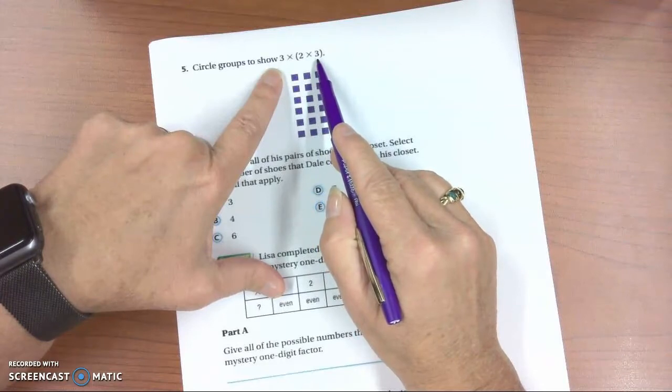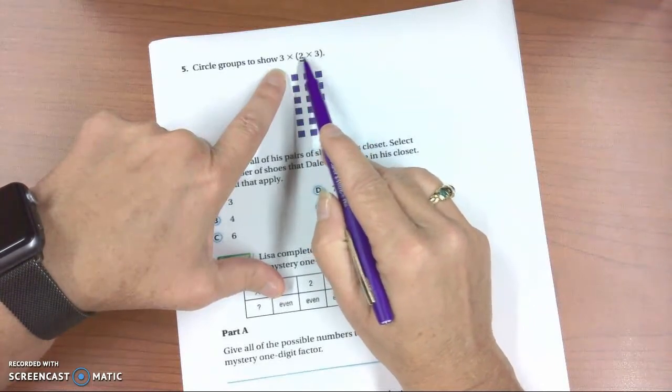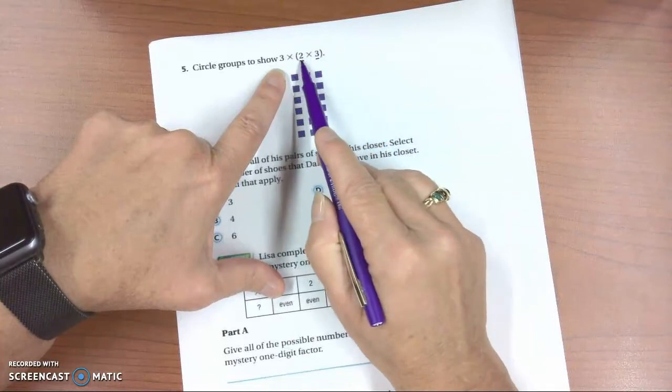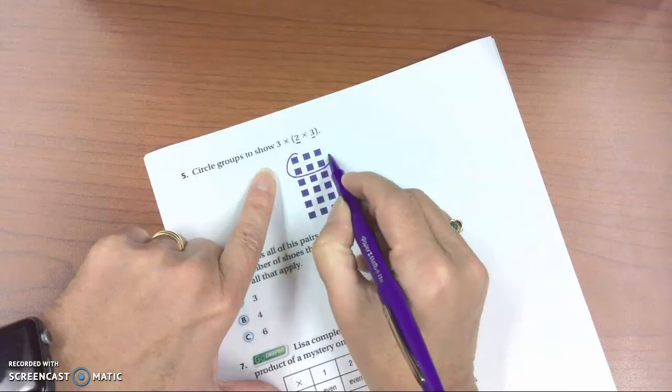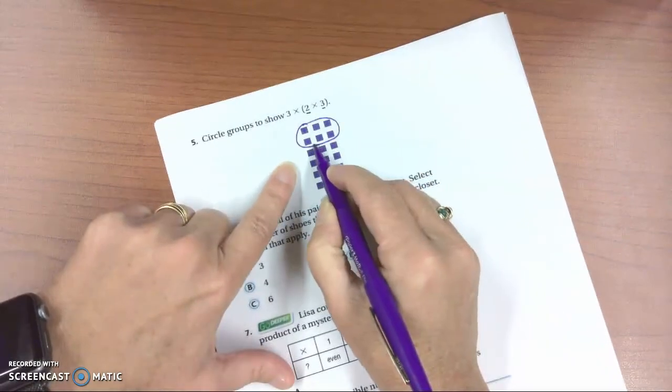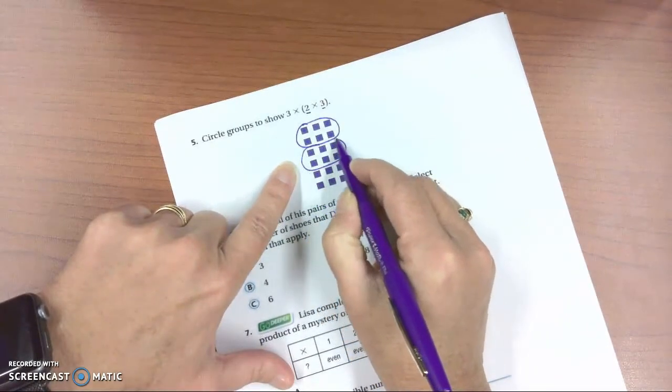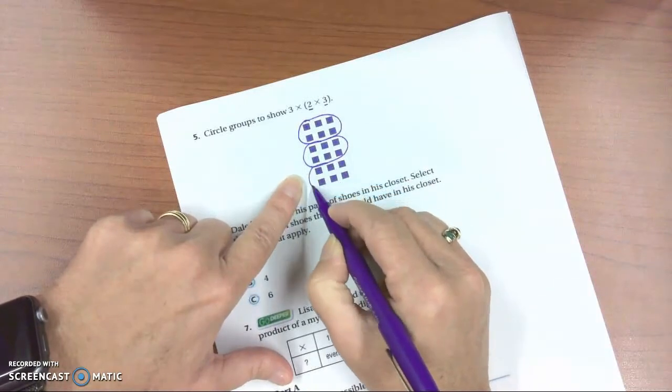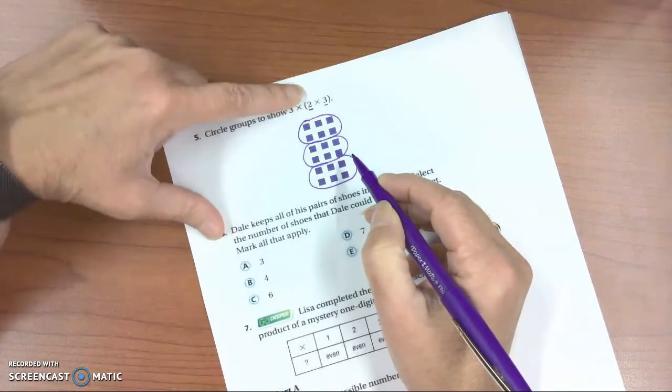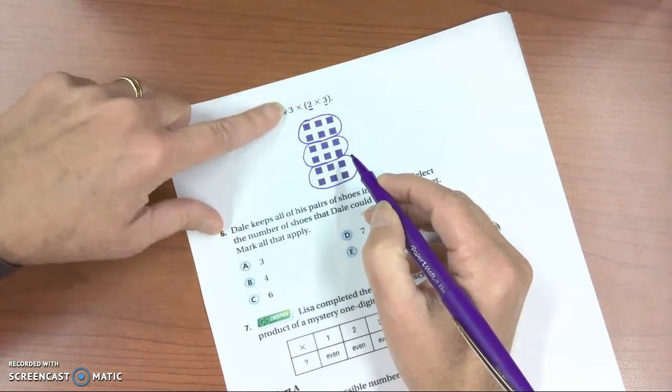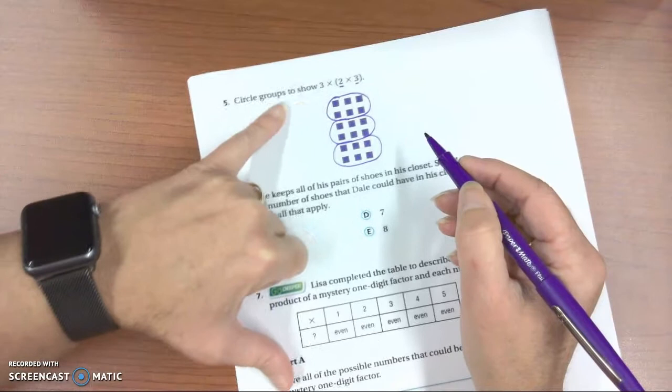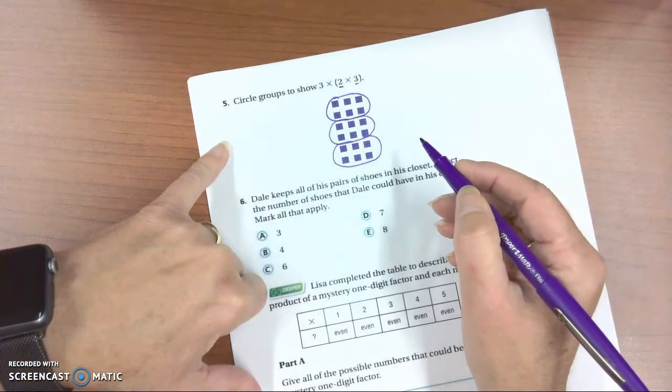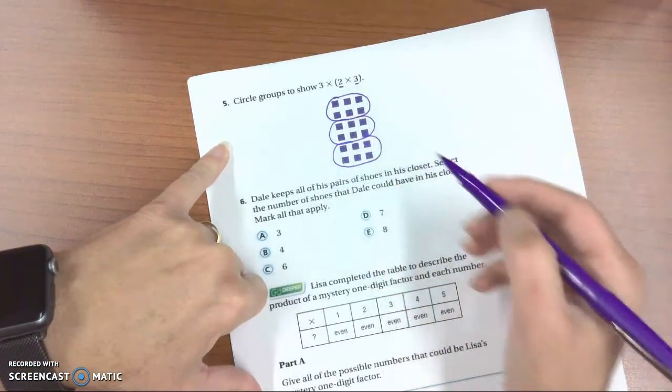When you remember what you were doing with arrays in the last chapter, we had 2 groups of 3, 2 rows of 3. So here's 2 rows of 3. Here's another 2 rows of 3. Another group of 2 rows of 3. And I have 3 groups of 2 rows of 3.